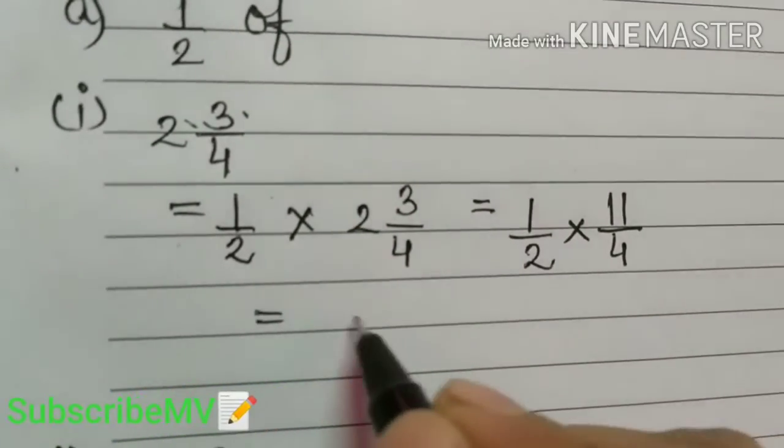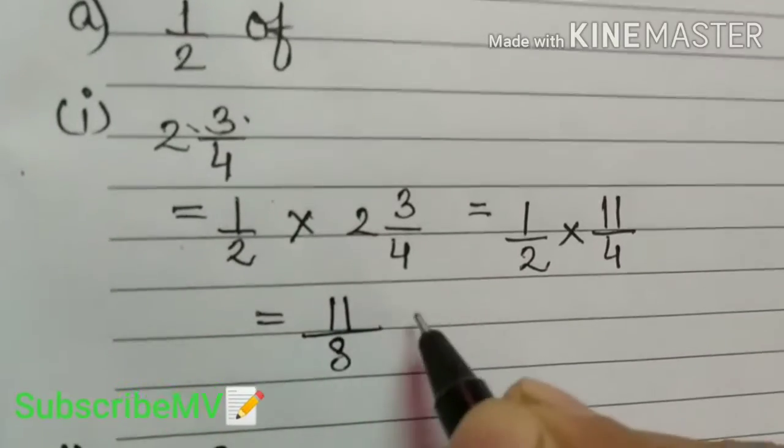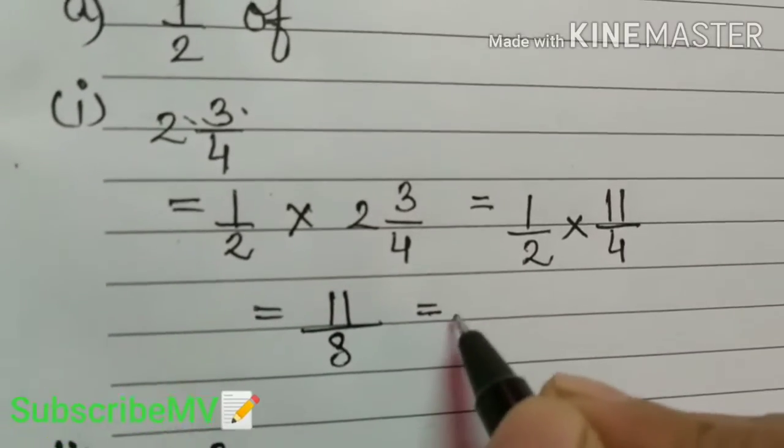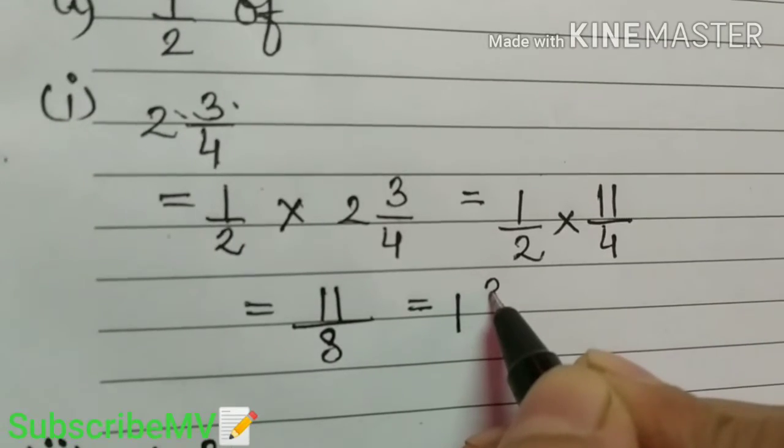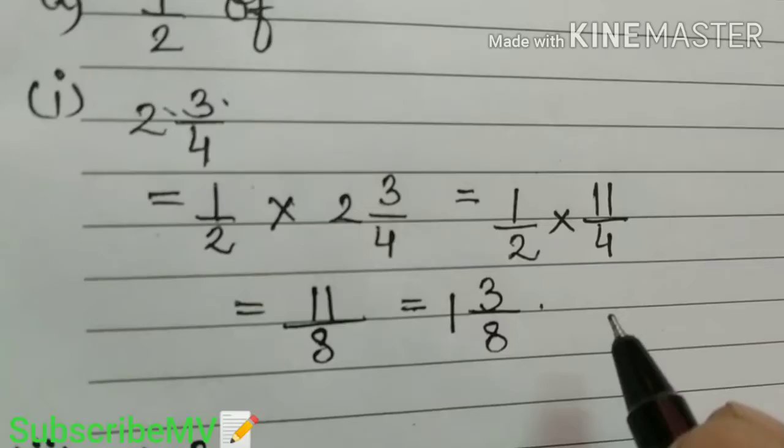So we get 11 into 1, 11 by 2 into 4, 8. You know 8 ones are 8, remainder 3 by 8. So this is the mixed fraction.